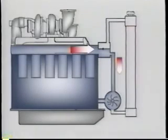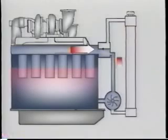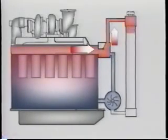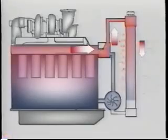At this point, the thermostat acts as a gate, directing the coolant back through the engine until it reaches the correct operating temperature, or sending it back into the top of the radiator for recirculation, where the fan either pushes or pulls air through the radiator to cool the liquid.